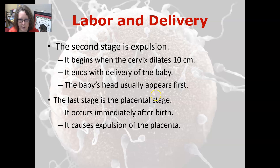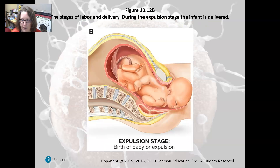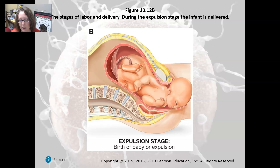The second stage is expulsion. It begins when the cervix reaches 10 centimeters of dilation and extends through the delivery of the baby. The baby's head usually appears first. The third and final stage is the placental stage, which occurs immediately after birth and involves the expulsion of the placenta. Here is the expulsion stage illustrated: the baby is being born and the placenta is still present but will be birthed shortly after — definitely much easier than the baby, as the placenta is far smaller. That wraps up the female reproductive system anatomy and physiology review.